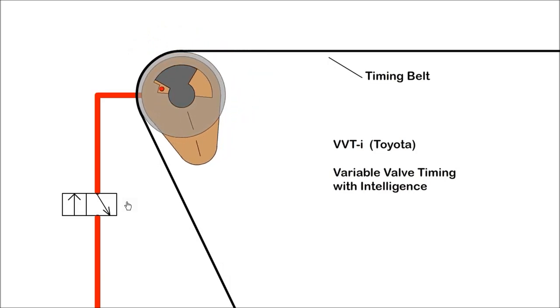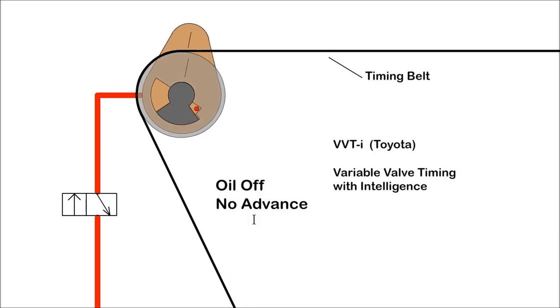With the double overhead cam engine, it's possible to adjust both inlet and exhaust valves independently of each other. Note, VVT only adjusts timing, but VTEC adjusts both timing and lift.